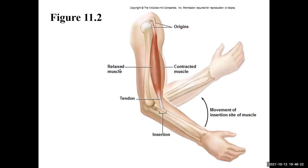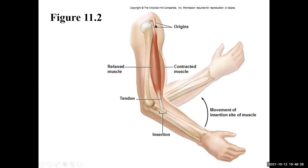When we talk about the biceps brachii muscle, it has two heads. One head attaches onto the coracoid process, and the long head runs along the head of the humerus. The origin is the less movable area up at the shoulder, and the insertion is down at the radial tuberosity of the radius, which causes movement of the forearm.